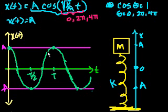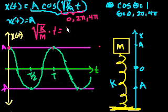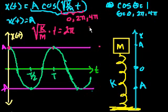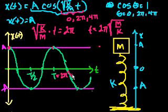The first time it cycles — from 0 to T — that'll be at 2π. So this whole expression equals A when the internal expression equals 2π. That means √(k/m) · t = 2π. Multiplying both sides by the inverse of √(k/m), we get t = 2π · √(m/k). And there we have the period of this function: T = 2π√(m/k).